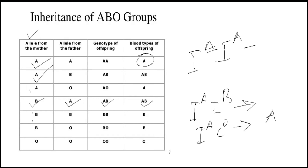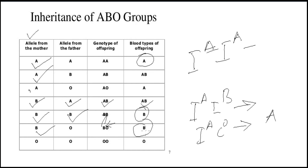In the fifth case, the mother has dominant B and the father also provides dominant B, so the blood group of the children will be B. In the sixth case, the mother provides dominant B and the father provides recessive O. B will be expressed and O will be suppressed, so the blood group of the children will be B.